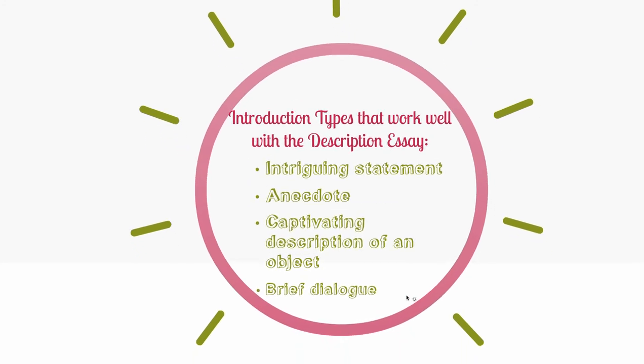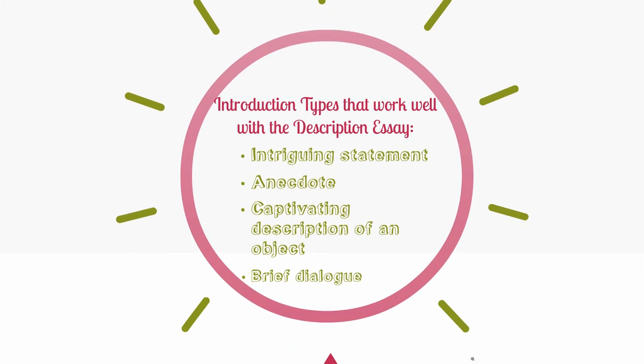Introduction types that do work well with this description essay: one, an intriguing statement; two, an anecdote — just a brief short story that's obviously related to the subject matter; three, a really wonderful description of an object that is related to whatever you're talking about for your description essay; or four, a brief dialogue. All four of those I've seen work really, really well with this particular essay.